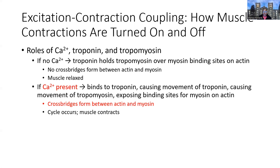On the other end, if calcium is present — if it has been released from the SR — it's going to bind to troponin. It's going to cause troponin to drag tropomyosin off of those binding sites, exposing those binding sites on actin so that myosin can bind. Now we can have cross-bridge cycling, and then we can see the shortening of the sarcomere, which is the muscle contraction. So: no calcium, no contraction; calcium, contraction.